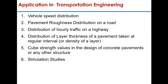Normal distribution is widely used in all fields of engineering, medicine, physical science, and economics. Random variables which follow normal distribution are those whose values can assume any value in a given range — for example, vehicle speed distribution, pavement roughness distribution on a road, distribution of hourly traffic on a highway, distribution of layer thickness of pavement taken at regular intervals, density of the layer at regular intervals, or cube strength values in the design of concrete pavements, where variation in cube strength follows the normal distribution.